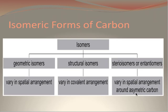In this diagram we see the isomeric forms of carbon. There are three major categories of isomeric forms of carbon. The first are the geometric isomers, which vary in their three-dimensional spatial arrangement. The second type are the structural isomers, which vary in the actual bonding configuration. And then finally, we have stereoisomers, also known as enantiomers. And these vary in their arrangement around an asymmetric carbon atom.